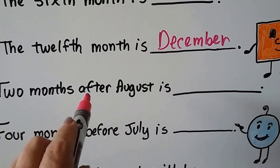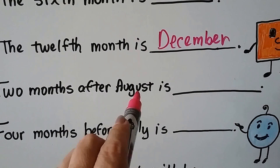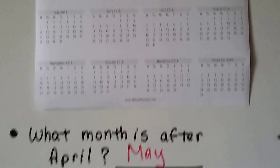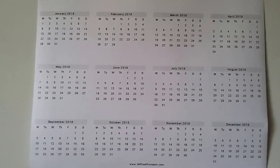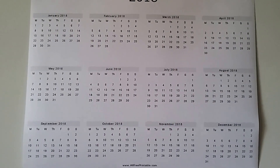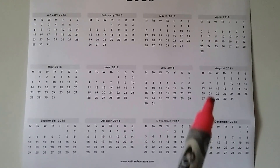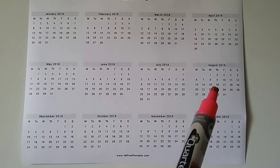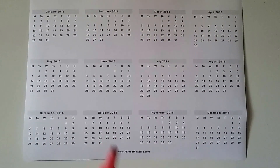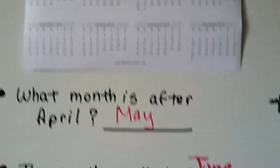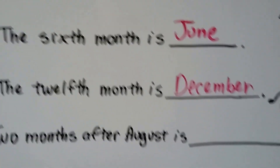Two months after August is... do you see August? August is right here. What's two months after August? Let's count: August, one, two — it's October. October is two months after August.